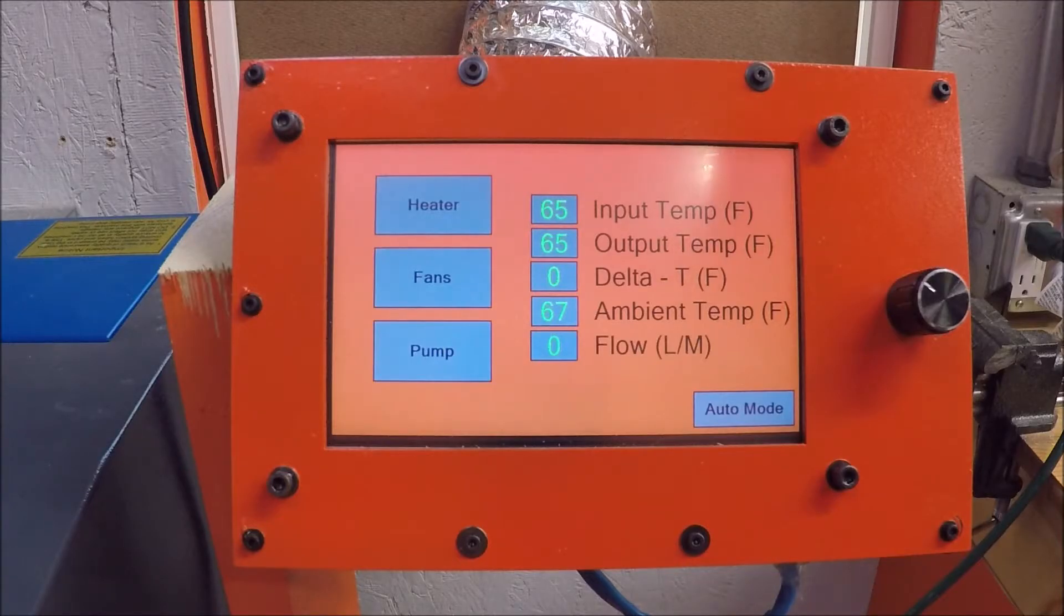The original control panel was very basic. It had an Arduino Nano inside of it, an LCD display, some switches, and a potentiometer, and some lights. And that was it. That's all I needed, and it actually worked really, really well.